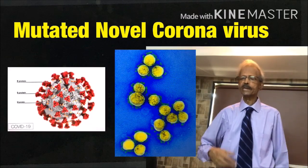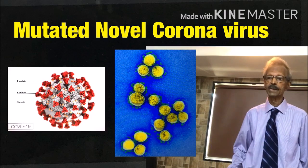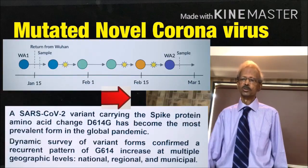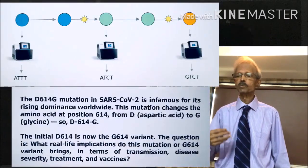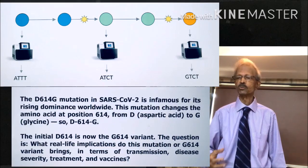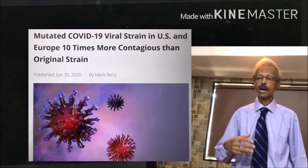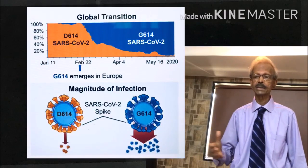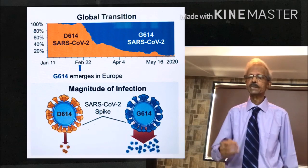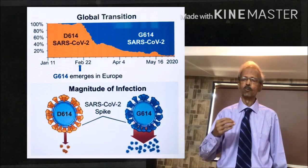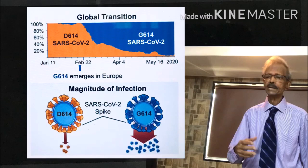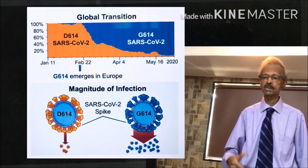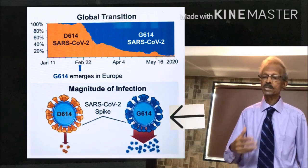Today we will discuss one very important topic related to COVID-19: mutated versions of novel coronavirus produced in the past 9 months, and whether any specific mutated version is the most toxic, killing young individuals without any comorbidities like diabetes, hypertension, heart disease, etc. According to eminent virologists and genomic researchers, besides hundreds of minor mutated versions, two major mutated variants are in circulation: D614 and G614.